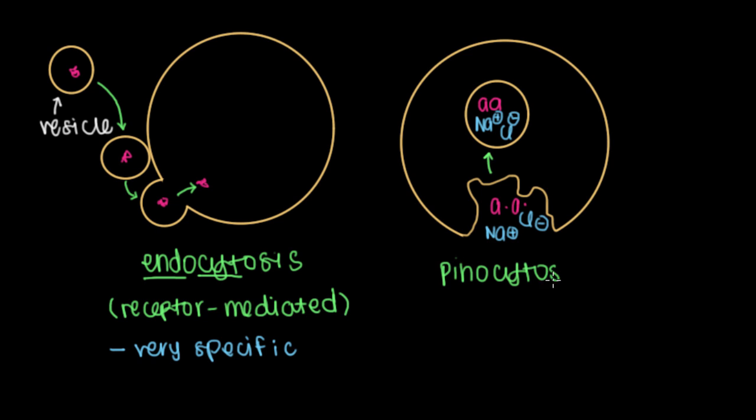Pinocytosis, as you recall, cite meaning cell, but pino literally means to drink. So pinocytosis is where a cell will drink stuff in the extracellular space. And relative to receptor mediated endocytosis, pinocytosis is not specific. It'll just gulp up a whole bunch of random things.